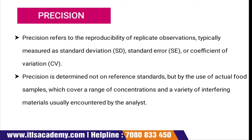Precision simple language mein indicate karta hai ki koi bhi instrument same result kaise produce kar sakta hai jab usse baar baar test kiya ja raha ho. For example, aapne koi experiment perform kiya aur ek certain reading aayi. Dobara experiment perform karte hain — agar second time bhi reading same aaye to pehli reading sahi thi. But agar second time reading match nahi karti to wahan error hai. Precision ek continuous reproducibility provide karta hai.